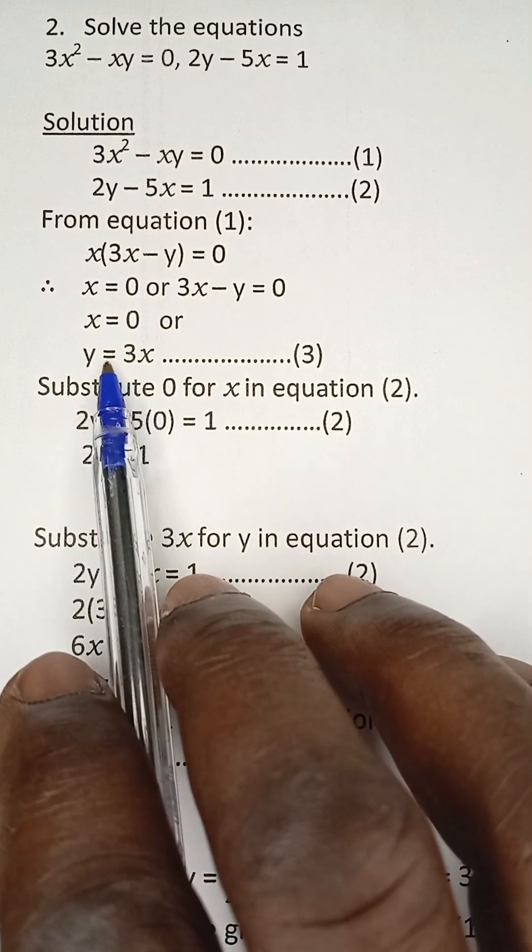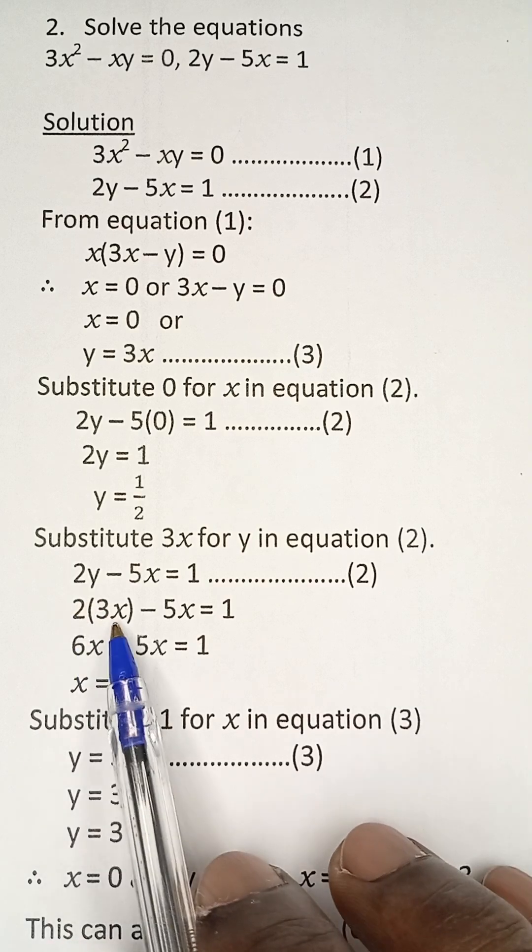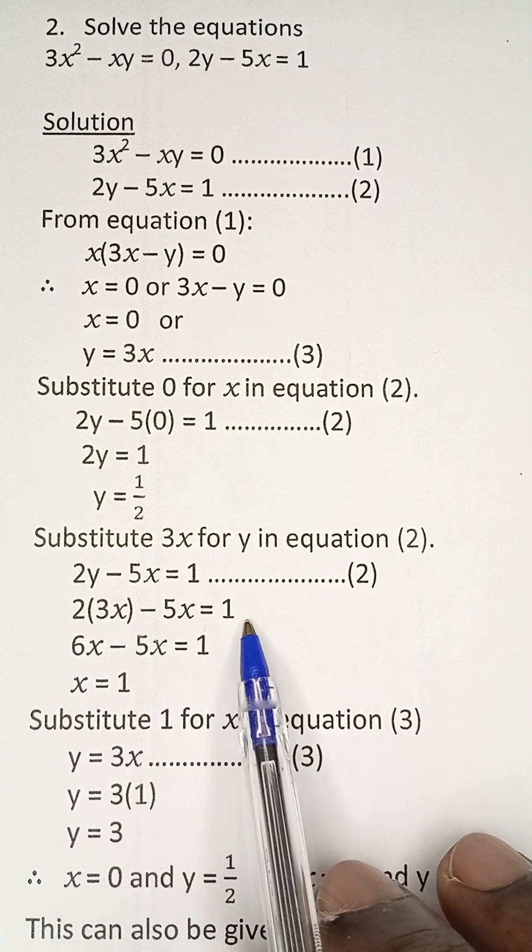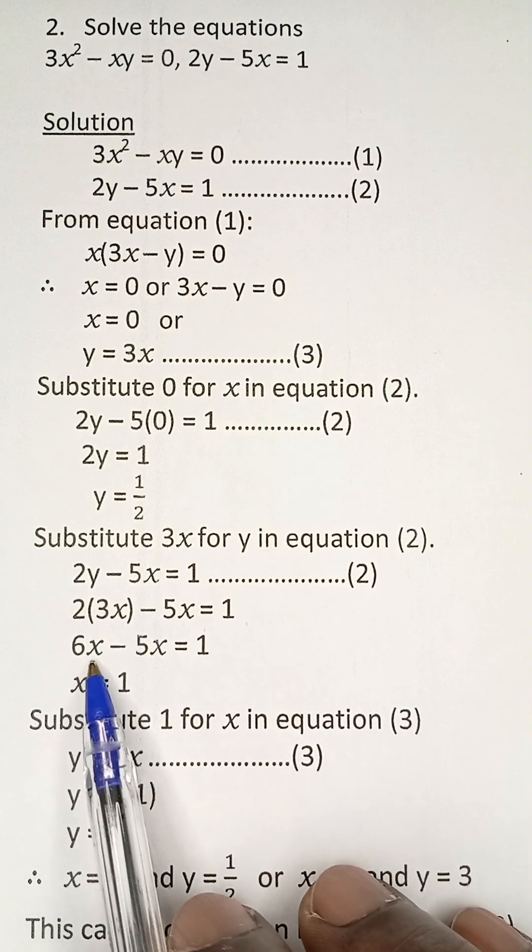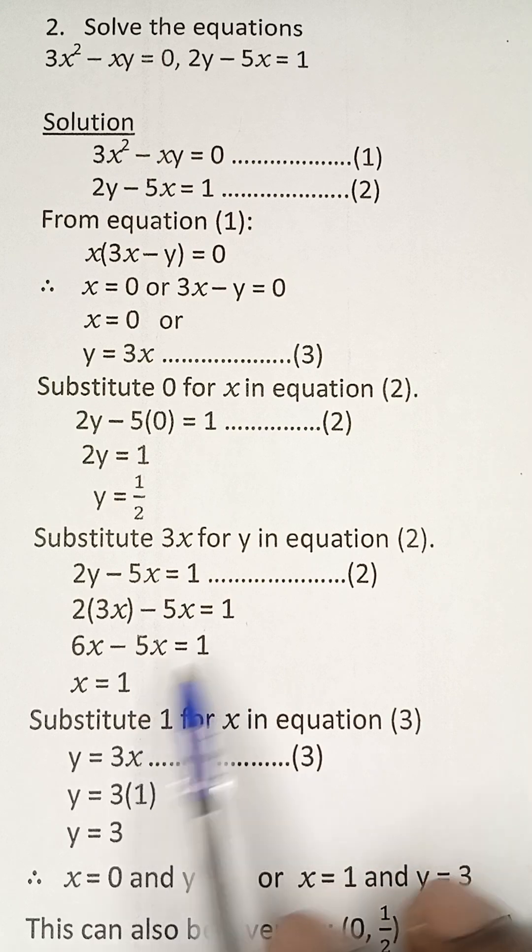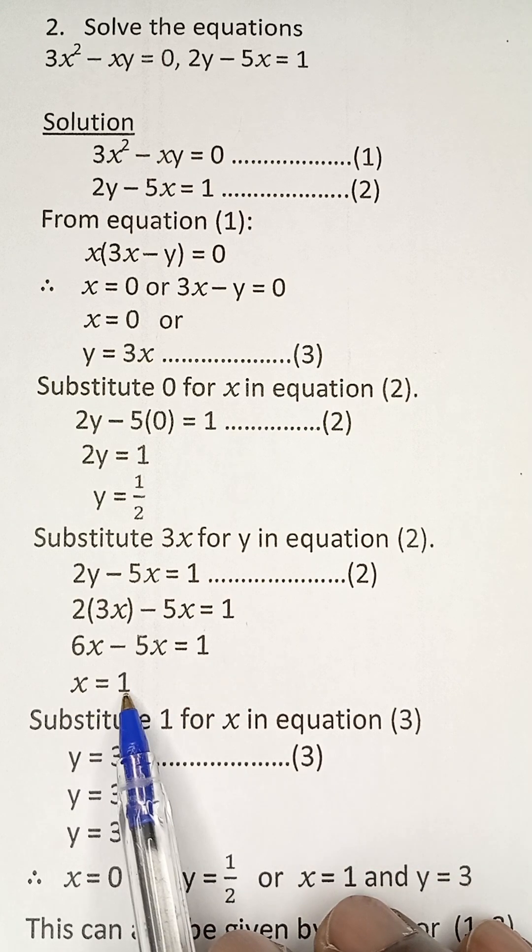2(3x) because y is 3x. 2 multiplied by 3x minus 5x equals 1. We have 6x - 5x = 1, and that will give us x = 1.